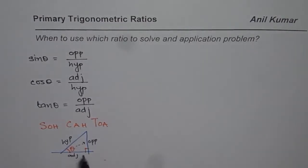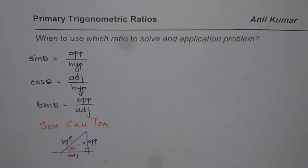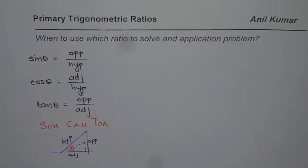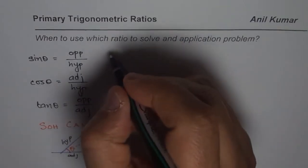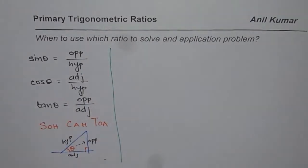Side adjacent with hypotenuse gives cosine theta, and tan is opposite over adjacent. These are the basic definitions — any right triangle can be solved with the help of these three primary trigonometric ratios. We also have their reciprocals, which are called secondary trigonometric ratios.